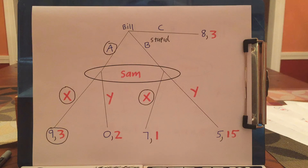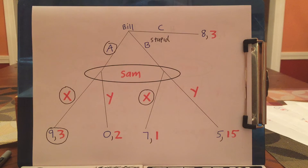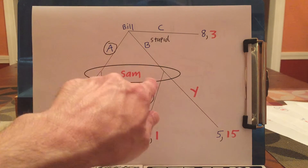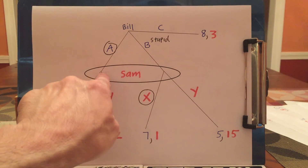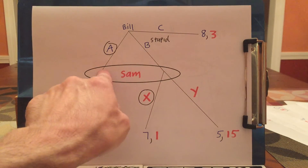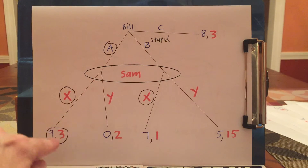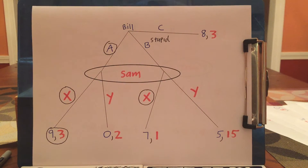Sam should realize this about Bill. If Sam is told it's his move, he knows C hasn't been played. But he can also infer that B hasn't been played. So when Sam gets to move, even though Sam can't see if he's here or here, he should be able to infer that he's on the left. And if Sam infers he's on the left and gets to move, he should pick X because 3 is greater than 2.